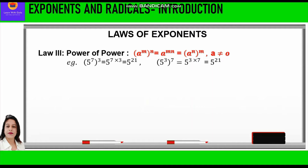The third law of exponents is power of a power. It says a raised to power m, whole raised to power n, is equal to a raised to power m into n. That means we can multiply both the powers. The other way round is also the same: a raised to power n, whole raised to power m, is also equal to a raised to power m into n, where a is not equal to 0. For example, 5 raised to power 7, whole raised to power 3, is equal to 5 raised to power 7 into 3, which is equal to 5 raised to power 21.